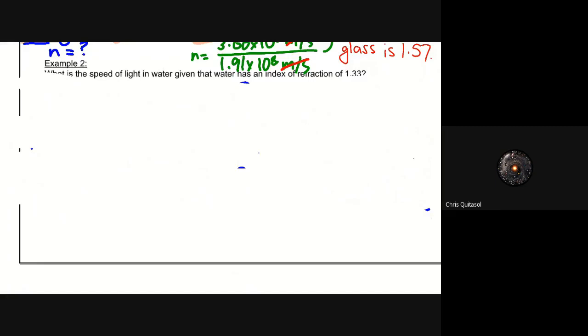Let's try an example where the speed of light in water is the thing we're trying to solve for. So what is the speed of light in water, given that water has an index of refraction of 1.33? So speed of light in water is what we're trying to solve for. And we've been given the n value, or that index of refraction, of 1.33 of water. We know the constant speed of light in a vacuum is 3.00 times 10 to the 8 meters per second.